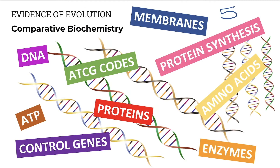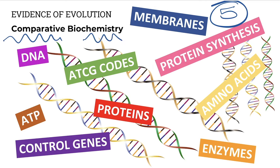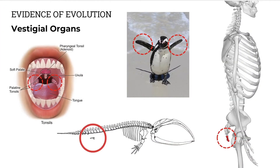Number five is comparative biochemistry, where we compare the chemicals in different living things. Whether you're an amoeba, or an ape, or an algae, you have the same chemical structure in your DNA, the same chemical structure of membranes, etc. Number six is vestigial organs. These are known as evolutionary remnants. Darwin considered them useless in modern species, but evidence of structures present in ancestral species.